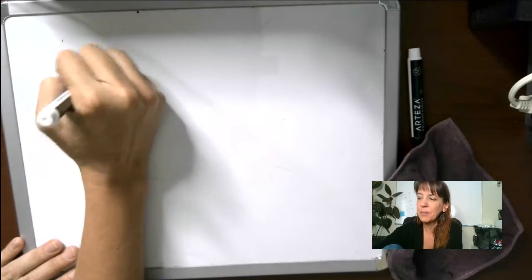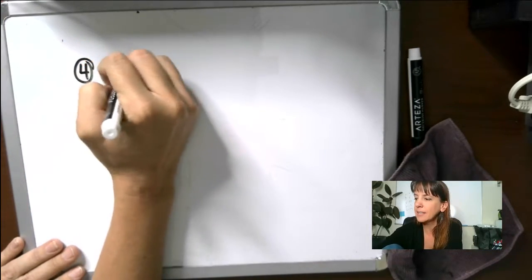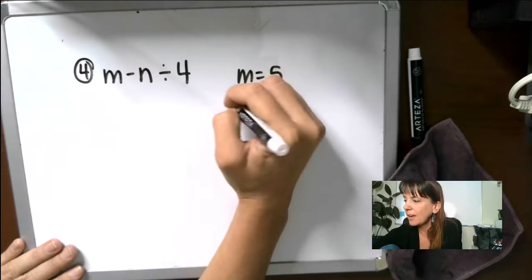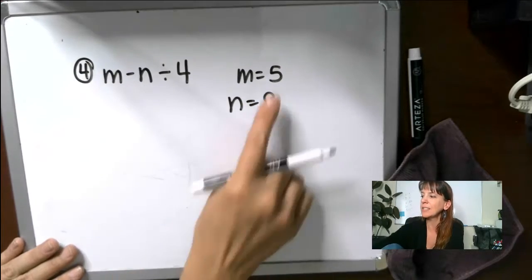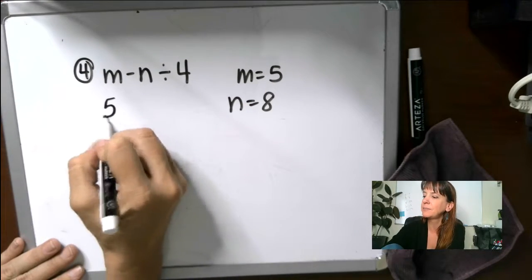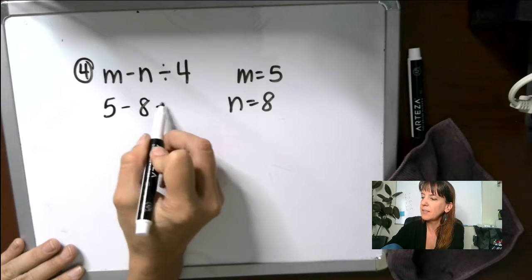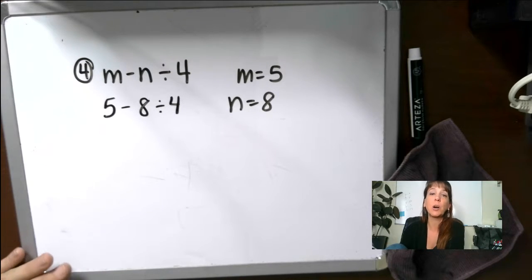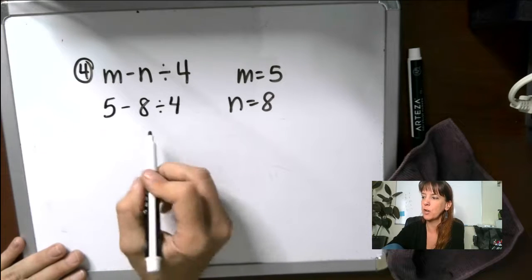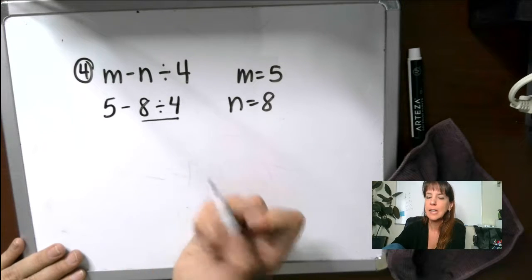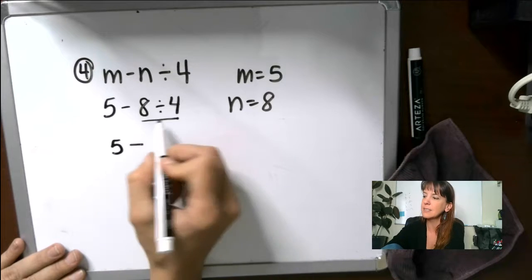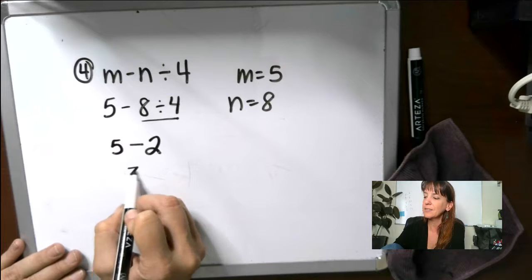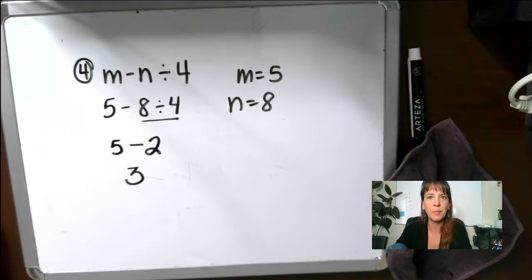Okay. So for number four, we have M minus N divided by 4. M equals 5, N equals 8. All right. So we're going to plug these guys in minus 8 divided by 4. Again, PEMDAS, right? We need to actually do our division before we do our subtraction. So do this bit first. So now we have five, bring everything else down. Five minus, 8 divided by 4 is 2. That gives us 3.